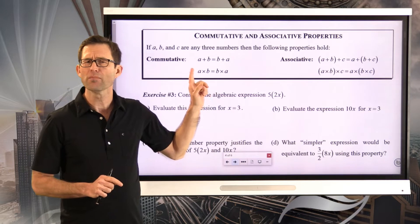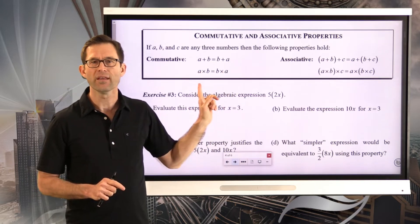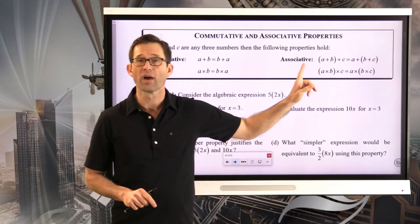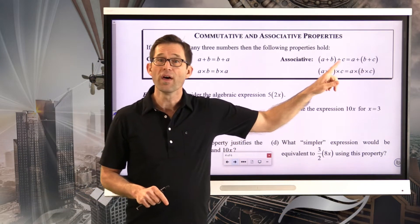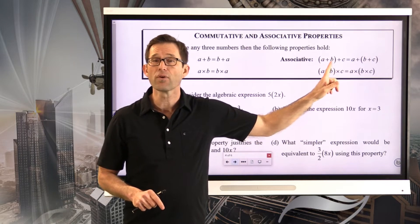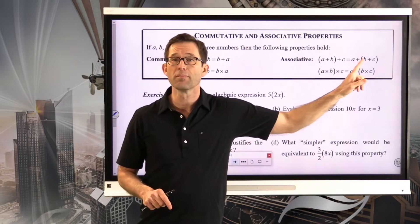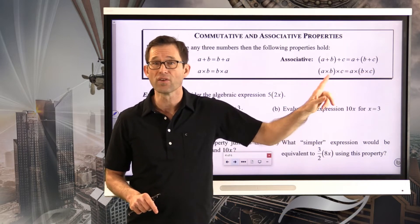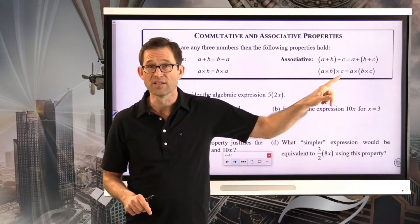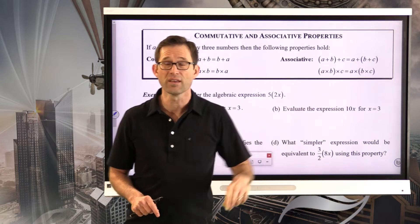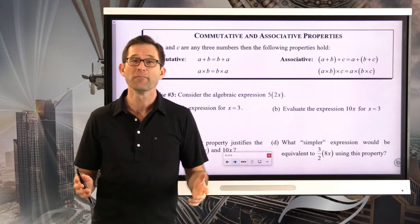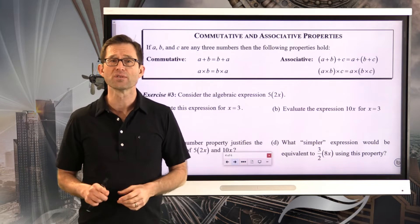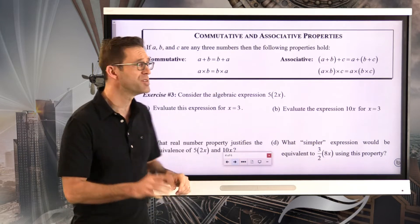So we've got these two amazingly important properties — the commutative and the associative — for both multiplication and addition. The commutative property: a plus b equals b plus a; a times b equals b times a. The associative property: a plus b plus c can be grouped as either (a plus b) plus c or a plus (b plus c), and likewise for multiplication.